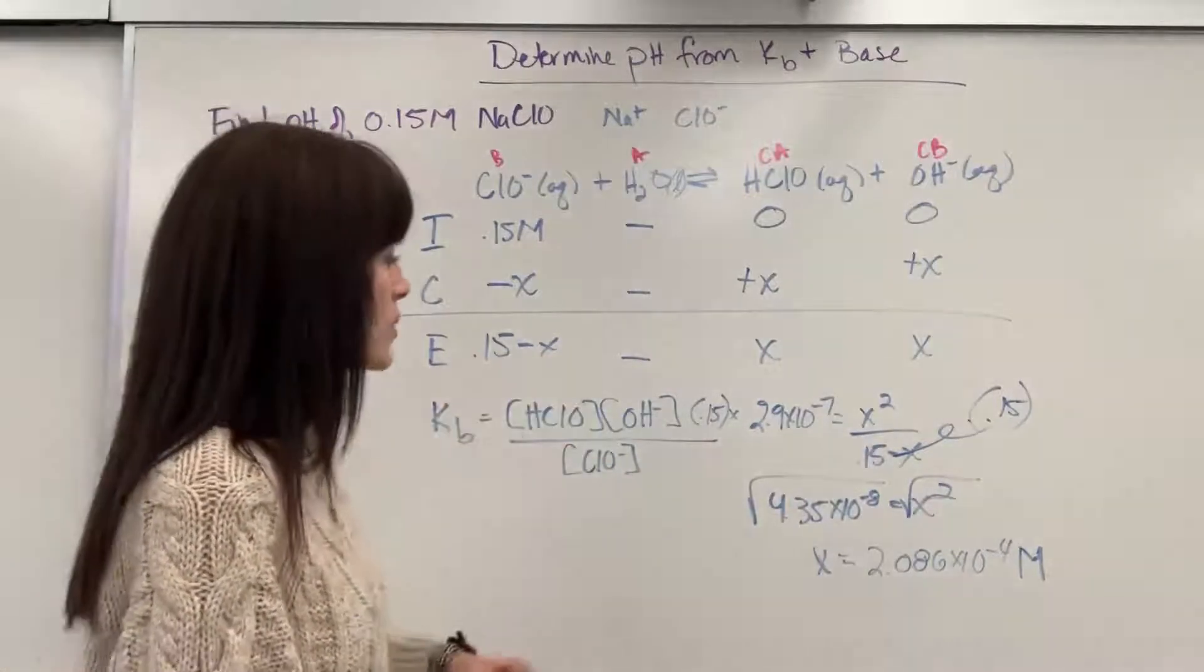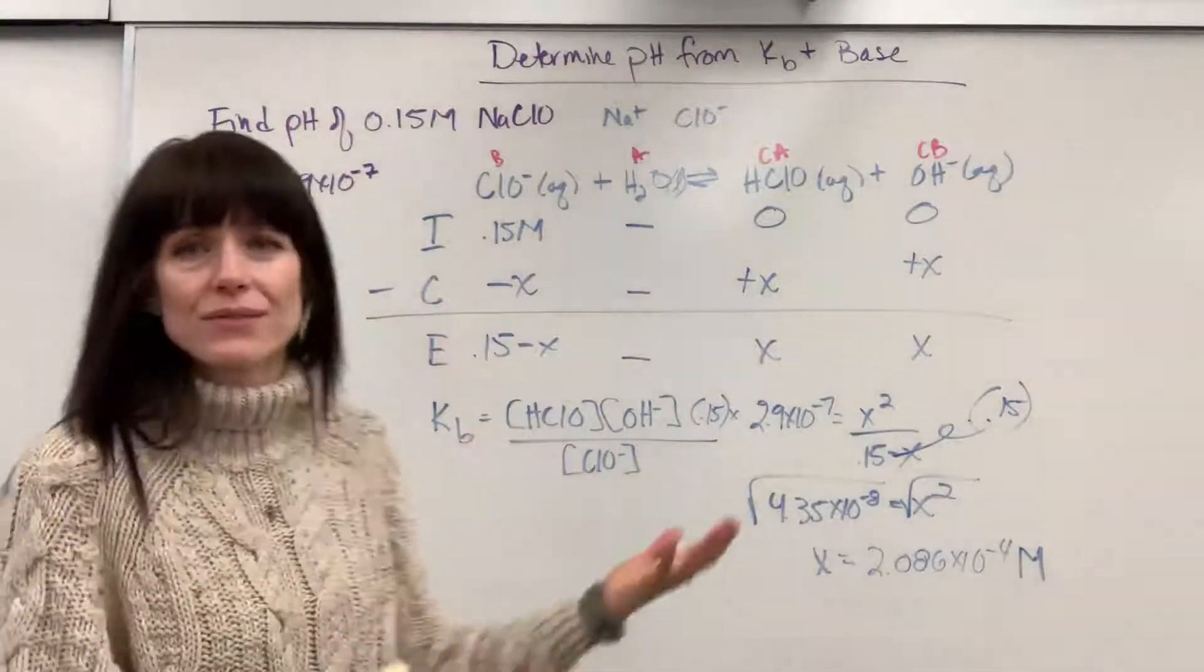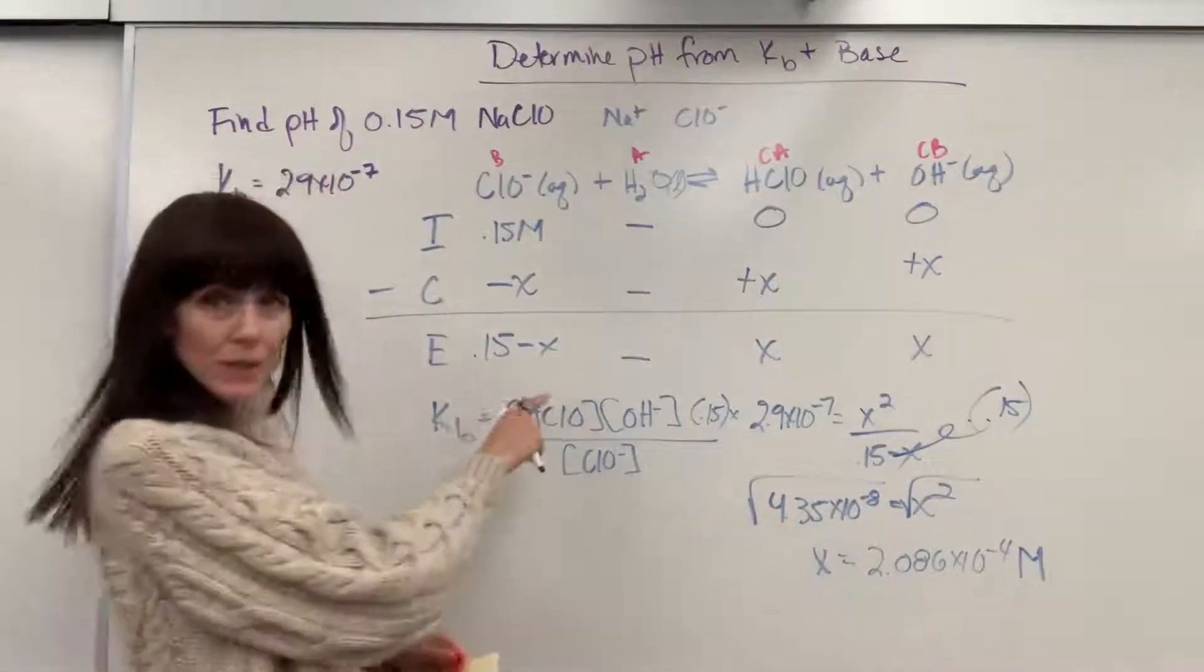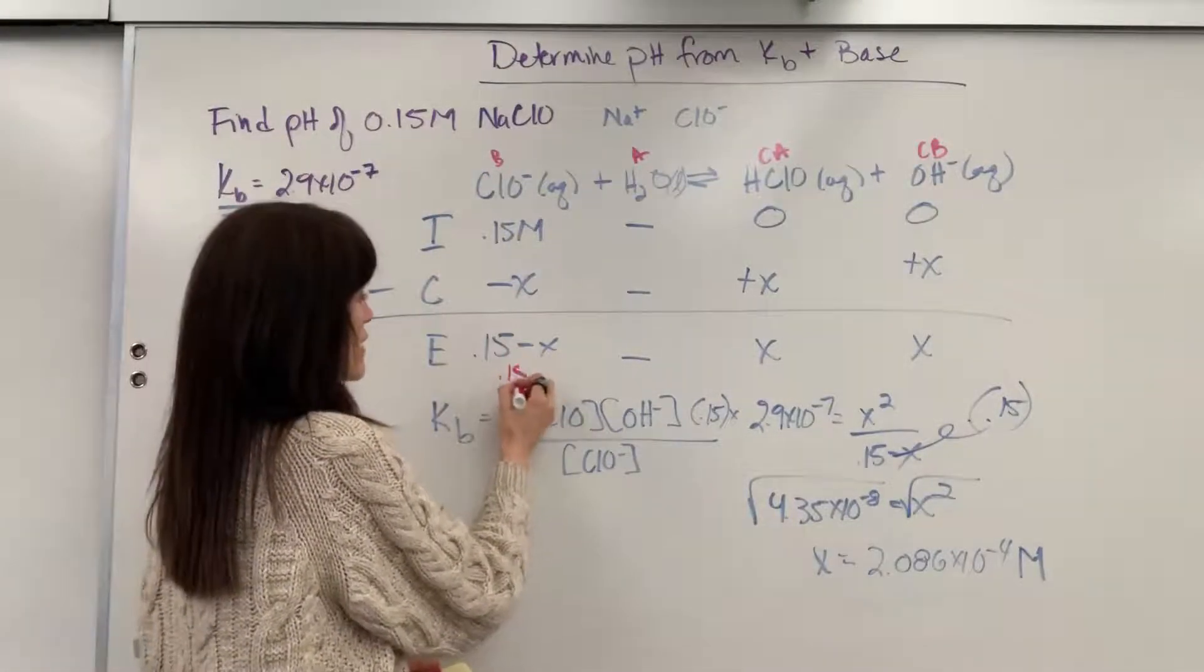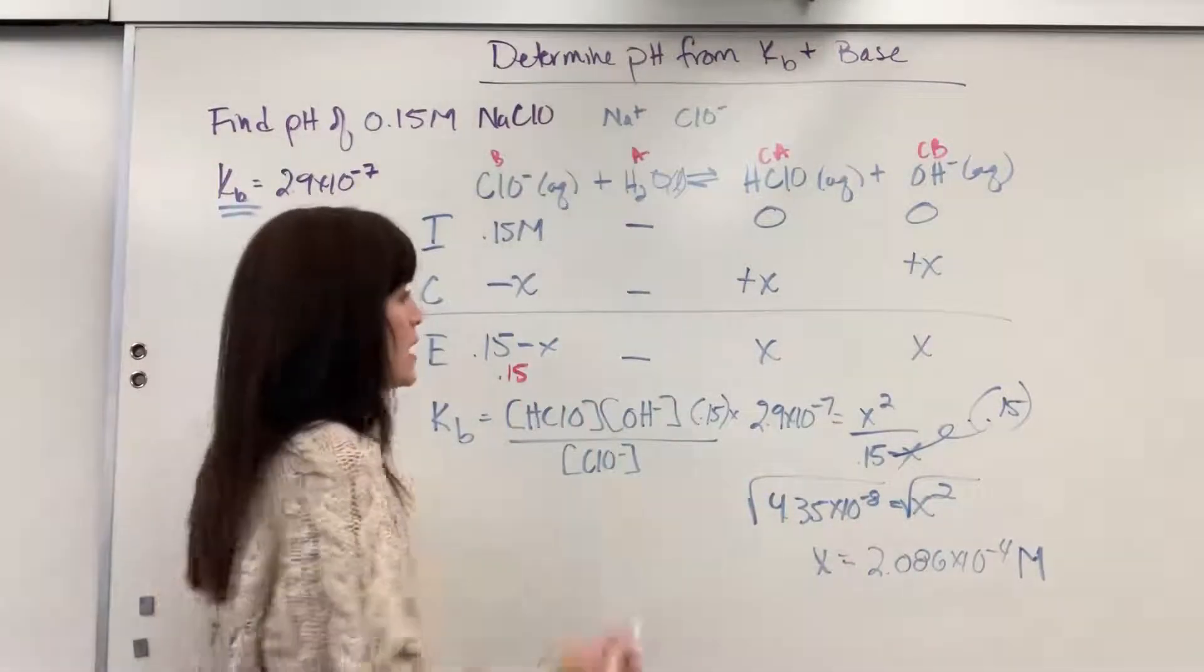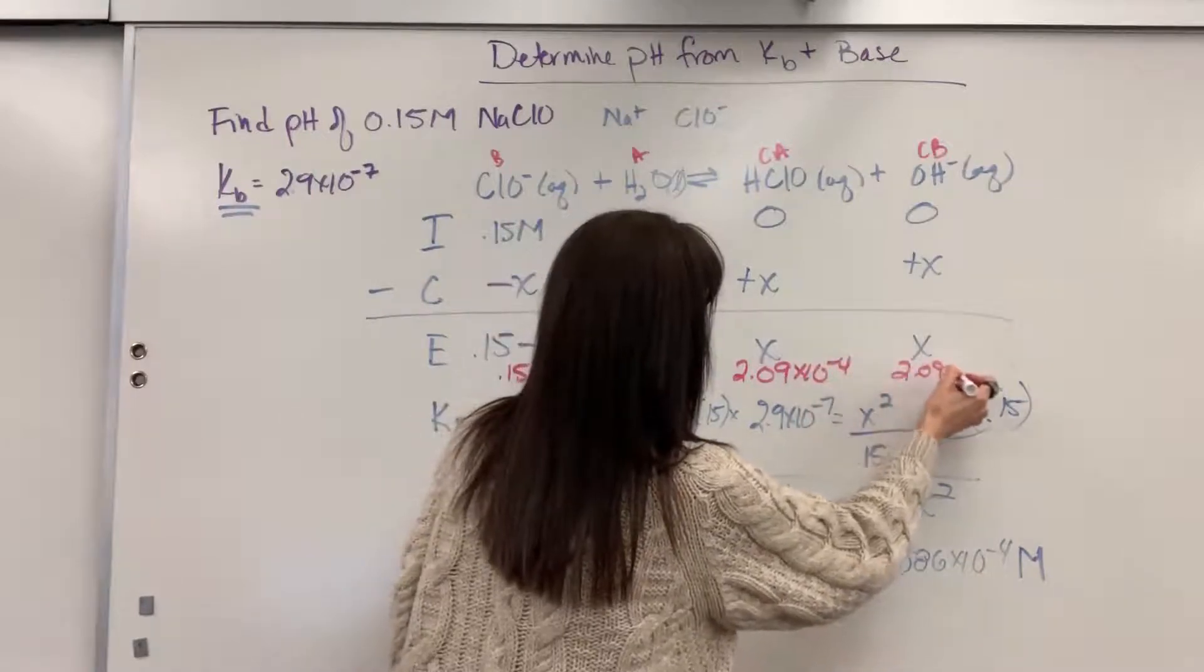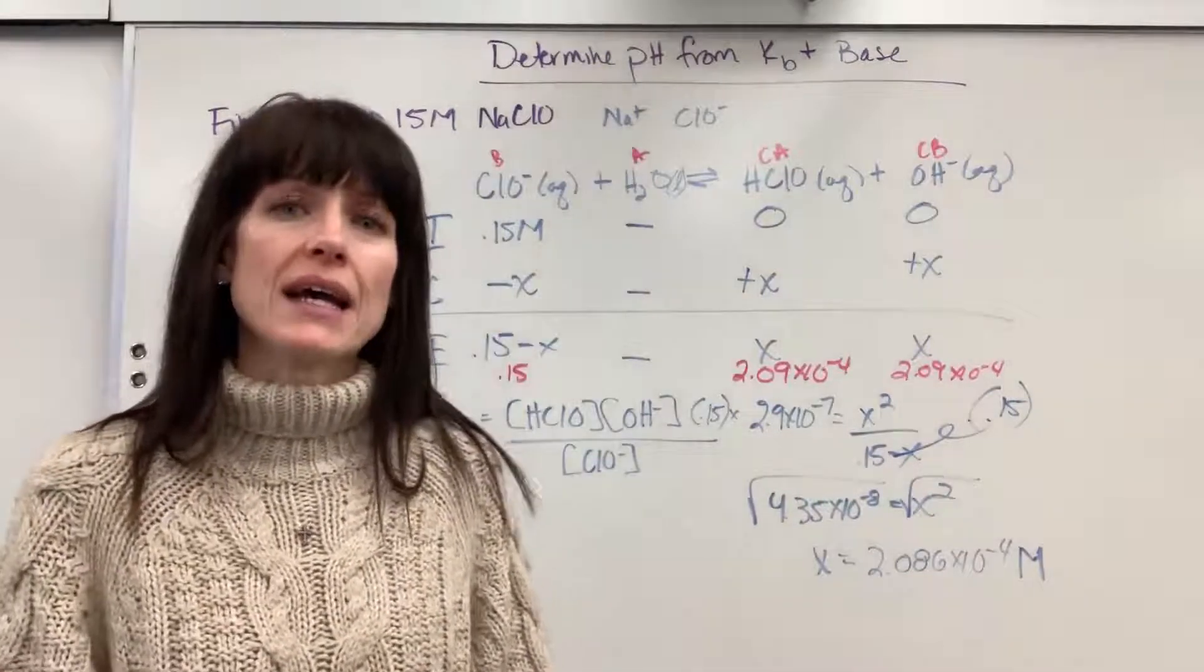I could come back and go ahead and plug in those numbers. Notice if I subtract this from the 0.15, it's still just going to be 0.15. That X is negligible. Let's go ahead and put in some numbers here. The equilibrium concentration for my hypochlorite is still going to be 0.15. Here we're going to have 2.09 times 10 to the minus 4. So we found the concentrations at equilibrium.